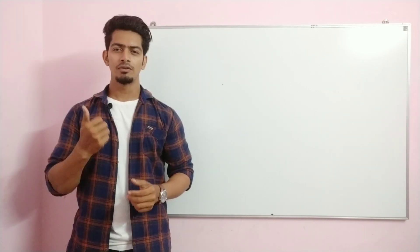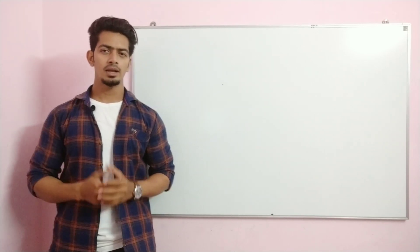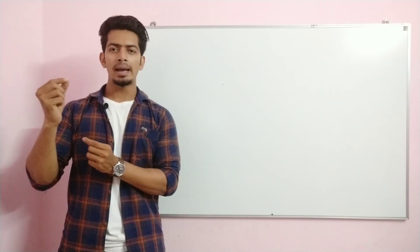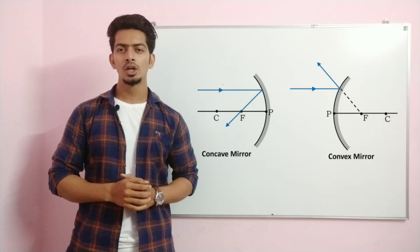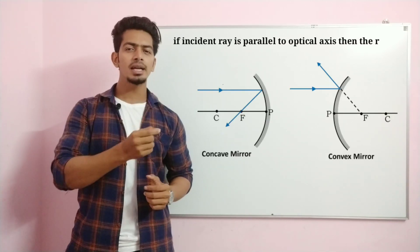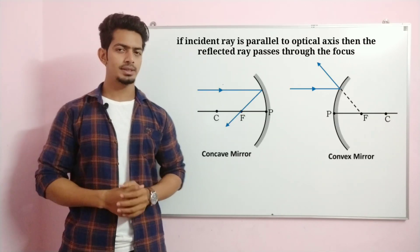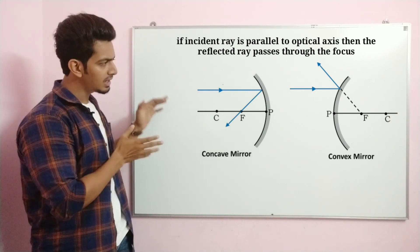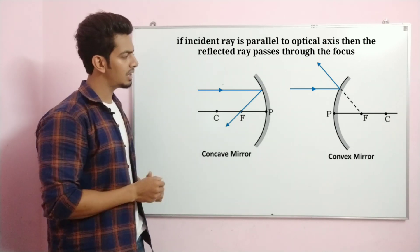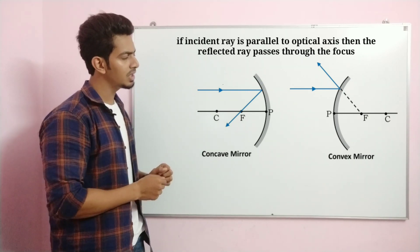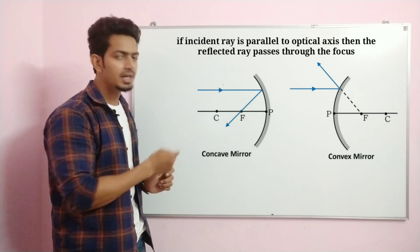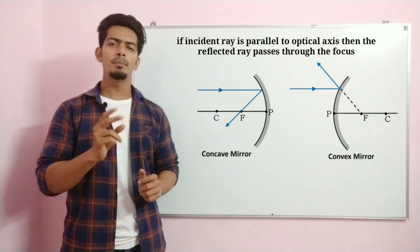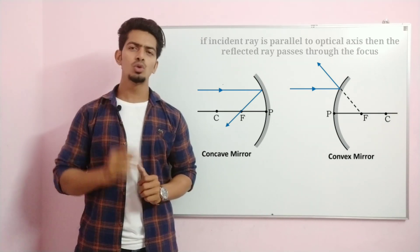Now we have rules of reflection for mirrors. Rule 1: if the incident ray is parallel to the principal axis, then the reflected ray will pass through the focus. As you can see in this image, light rays parallel to the principal axis reflect and pass through the focus.